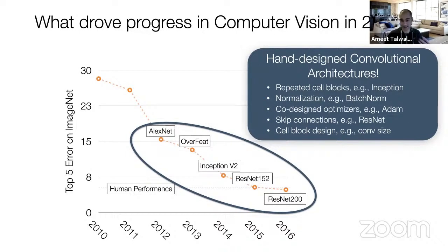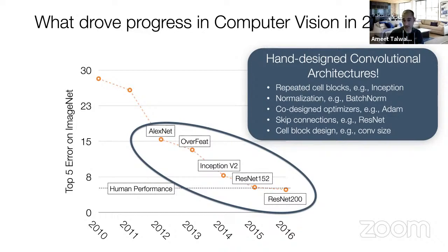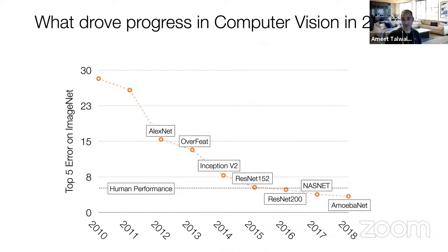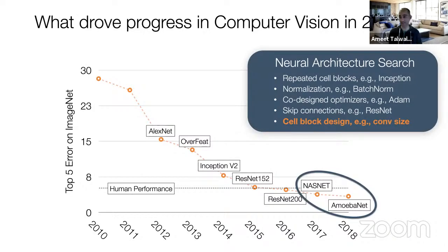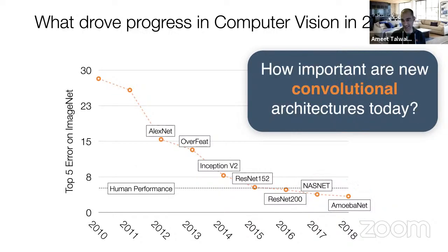Let's look at what drove progress in computer vision in the 2010s. Starting with AlexNet in 2012, it absolutely crushed previous best performance on ImageNet. We continually marched toward increasing progress, beating human performance by 2016 or so. In the first half of the 2010s, progress came from hand-designed convolutional architectures like GoogleNet's inception modules. Researchers fiddled with repeated block structures, normalization like batch norm, skip connections leading to ResNets, optimizer co-design, and cell block design — what size convolution, what kind of pooling, and so on.